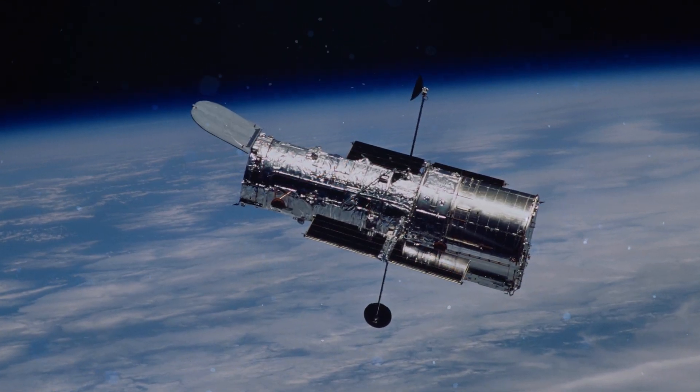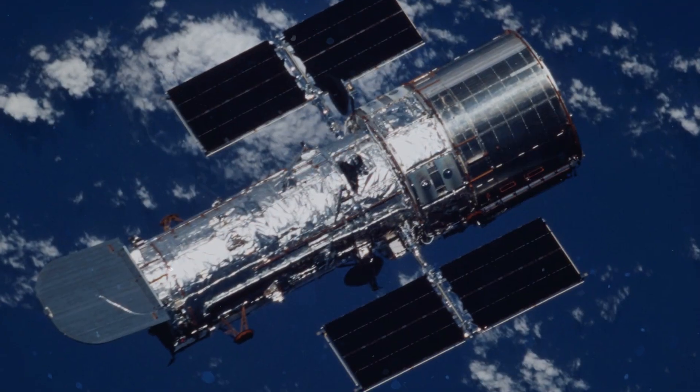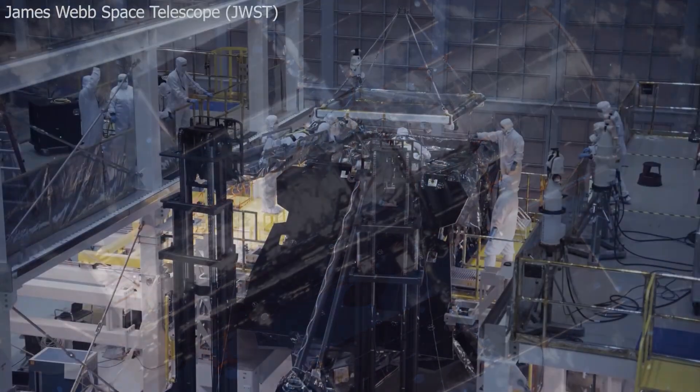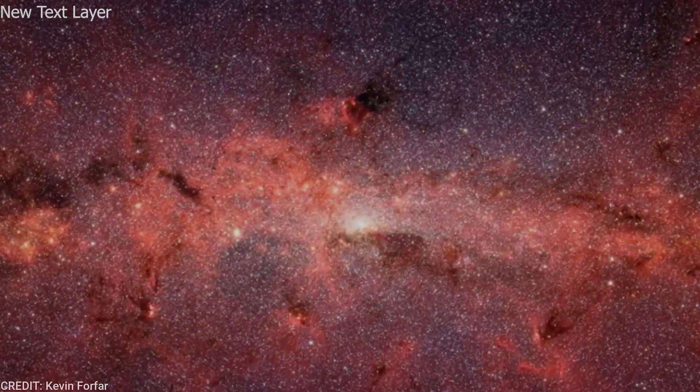However, Hubble has limitations as it cannot detect light beyond the near-infrared range, which restricts its level of detail. So Webb took over the investigation, focusing on the galaxies identified by Hubble and collecting detailed spectroscopic data in addition to images.